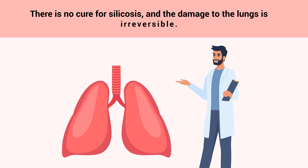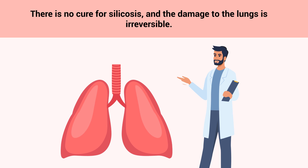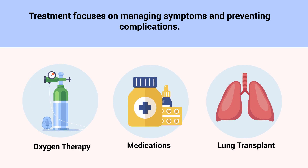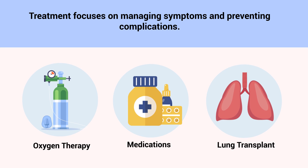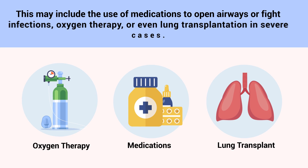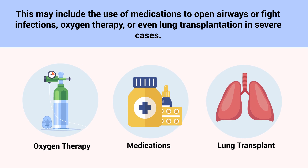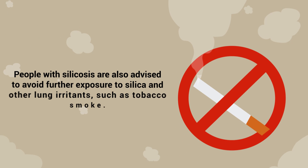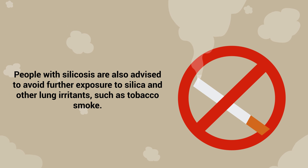There is no cure for silicosis, and the damage to the lungs is irreversible. Treatment focuses on managing symptoms and preventing complications. This may include the use of medications to open airways and fight infections, oxygen therapy, or even lung transplantation in severe cases. People with silicosis are also advised to avoid further exposure to silica and other lung irritants, such as tobacco smoke.